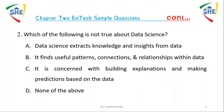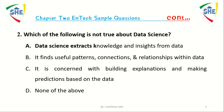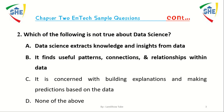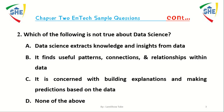Question number 2: Which one of the following is not true about data science? A) Data science extracts knowledge and insight from the data, B) It finds useful patterns, conditions and relationships within data, C) It is concerned with building explanation and making predictions based on data, D) None of the above.